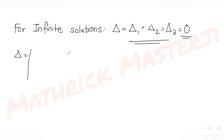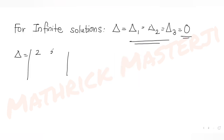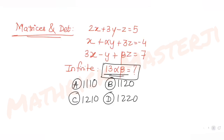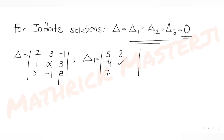Delta is the determinant of the coefficients of x, y, and z: the matrix [2, 3, -1 / 1, α, 3 / 3, -1, β]. For delta 1, you replace the x-coefficients column with the constant terms 5, -4, 7, keeping the other two columns as [3, α, -1] and [-1, 3, β].